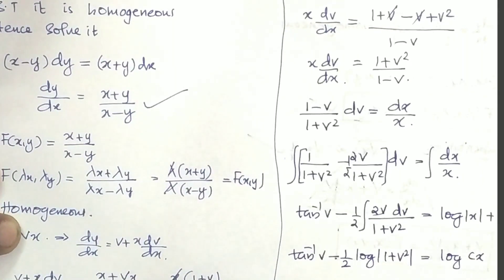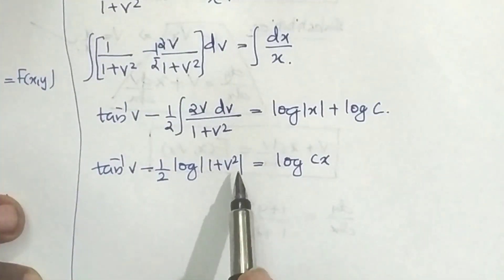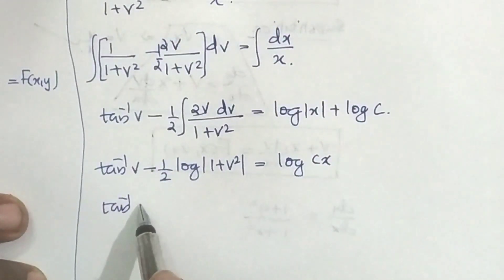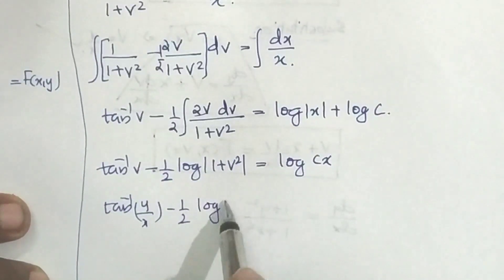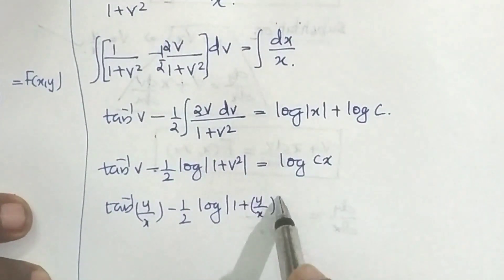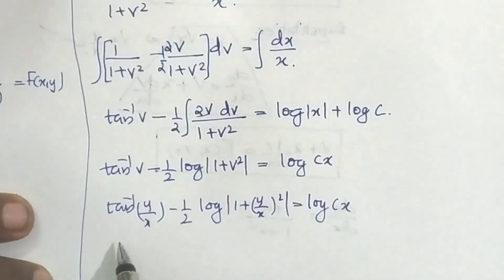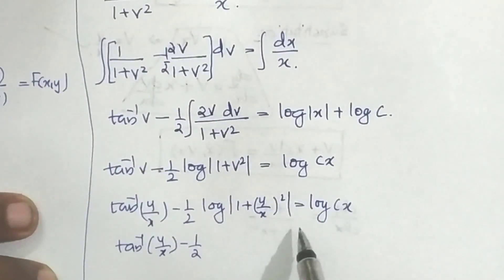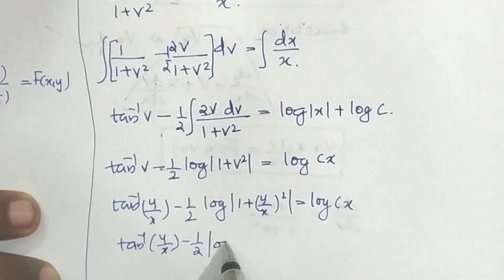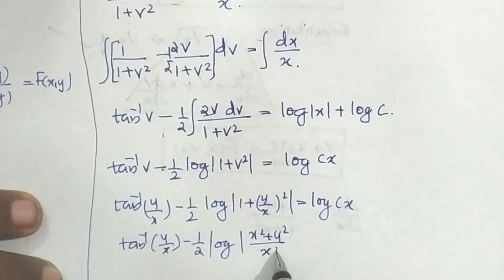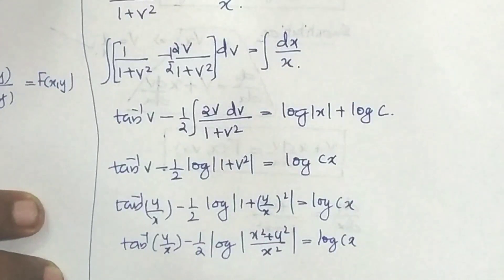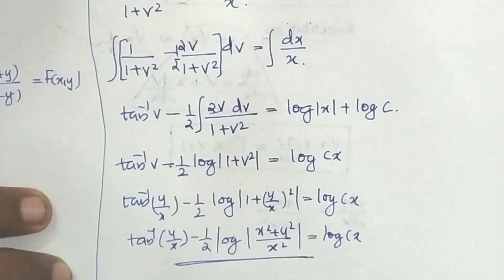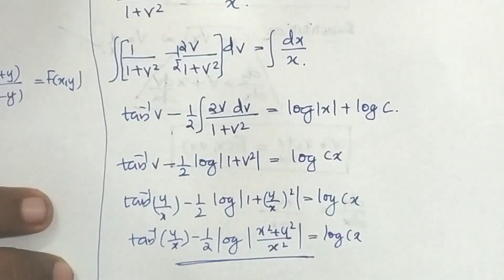Using log properties, we simplify. Resubstituting v = y/x: tan inverse(y/x) − (1/2) log|1 + (y/x)²| = log|cx|. Further simplifying: tan inverse(y/x) − (1/2) log|(x² + y²)/x²| = log|cx|. This is the solution.